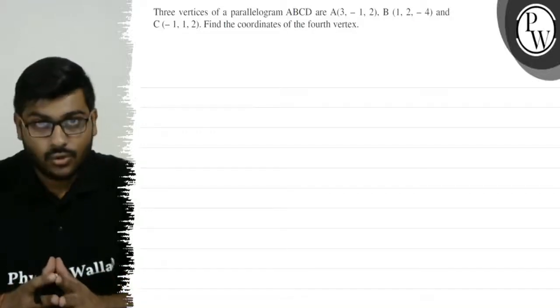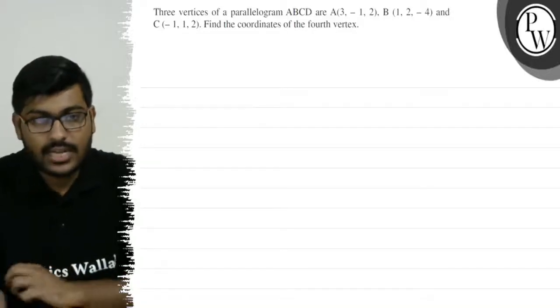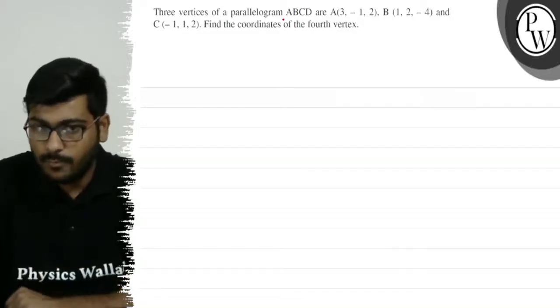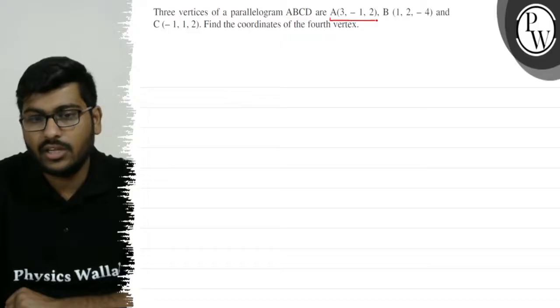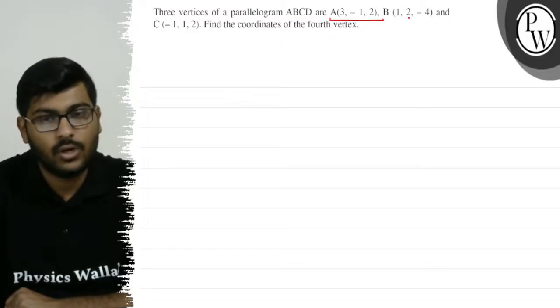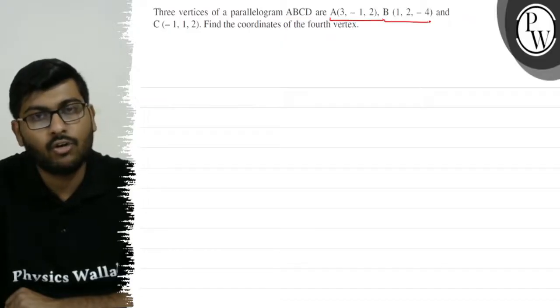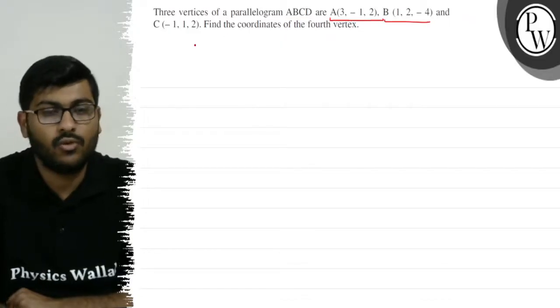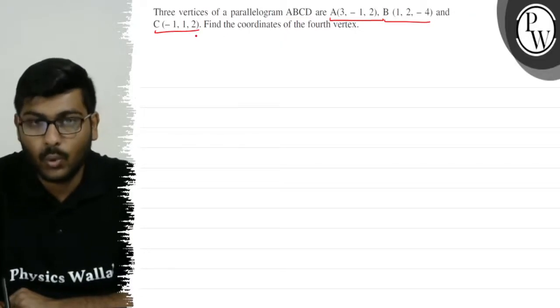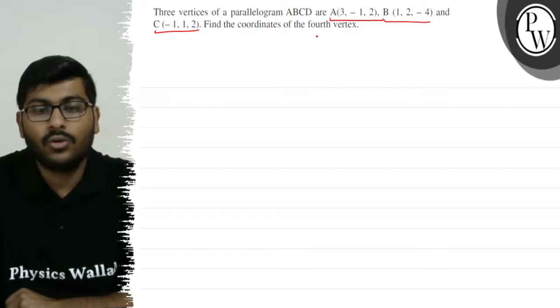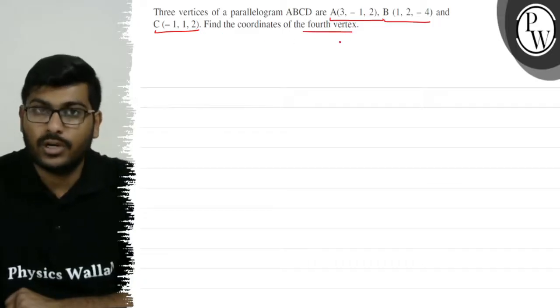Hello everyone, let's see this question. The question says that three vertices of the parallelogram ABCD are A(3, -1, 2), B(1, 2, -4), and C(-1, 1, 2). Find the coordinates of the fourth vertex.